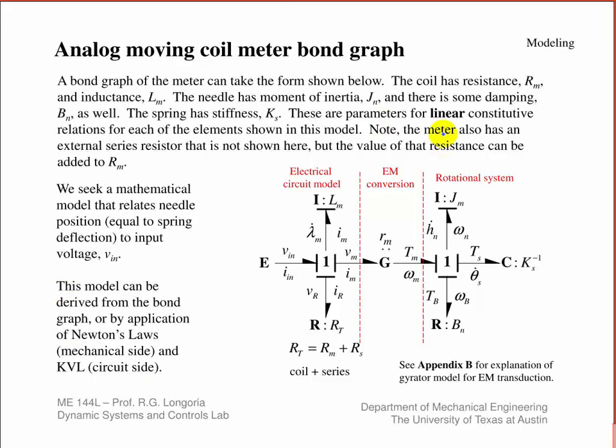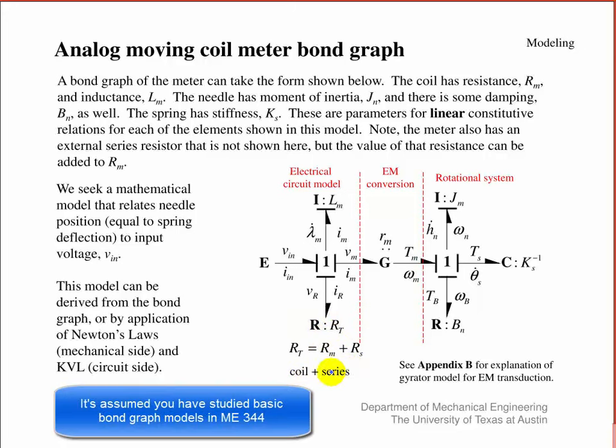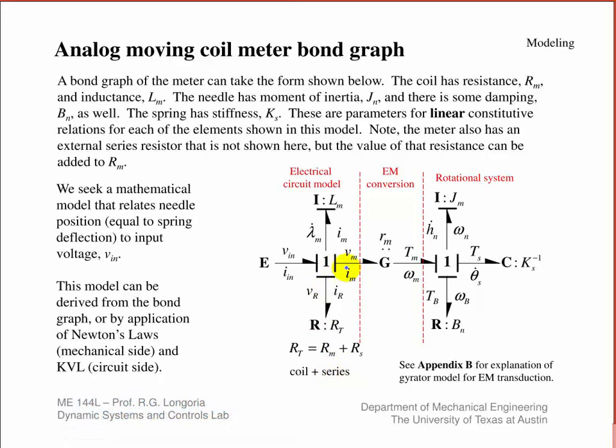I'm just going to show you the overall bond graph. The left side shows that circuit model. You have that voltage in, and it flows to a coil inductance. Remember, one junction represents a series circuit, so all of these elements have the same current. This is the total resistance - the coil plus the series resistance. That gets transduced through this gyrator into a torque. Remember, the motion of the needle itself also gets transduced into a back EMF, so that gyrator models that coupling between the rotational and electrical systems. On the mechanical side, you have your inertia - the moving coil together with the needle. Then you've got that coil spring, and I'm throwing some damping in there because there's some damping as that coil moves - some windage on the needle.